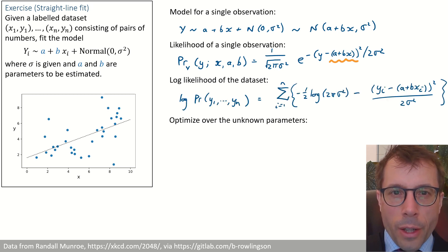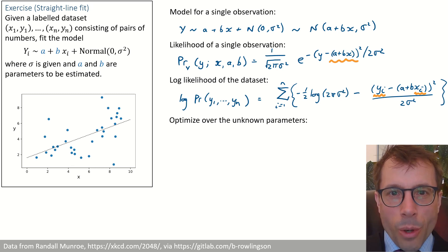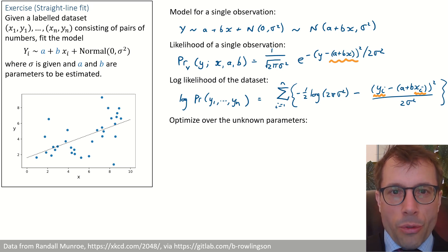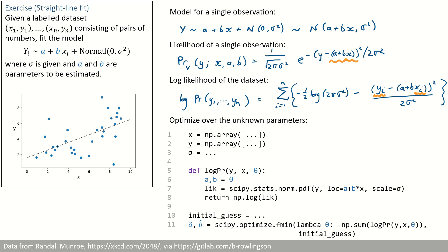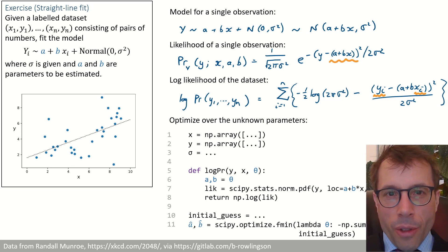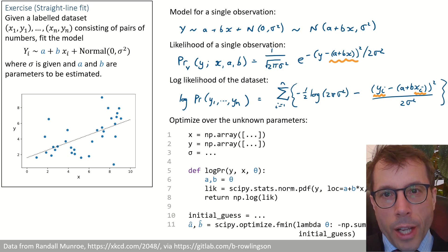Next, we write out the log-likelihood of the data set, assuming independence as usual. Don't blindly copy out your formula from the line above — in this equation we're talking about the data set y1 up to yn, so we need to put in subscripts yi and xi. Last, we optimize over the parameters. We've seen this style of numerical optimization several times already. For this question you could equally well do the optimization with calculus, and if you're interested in the details, you can see them in the printed lecture notes.